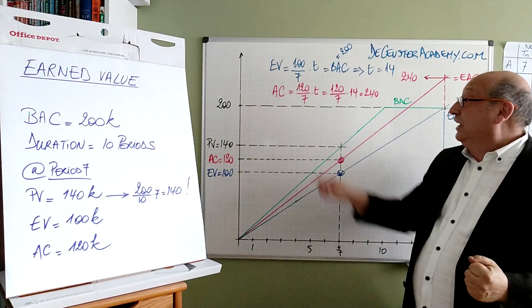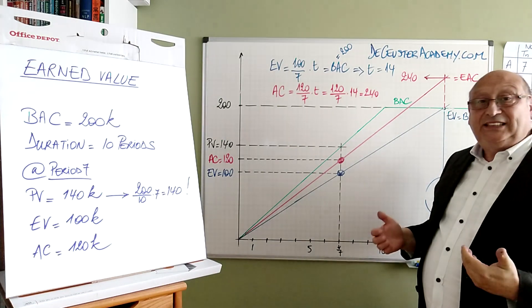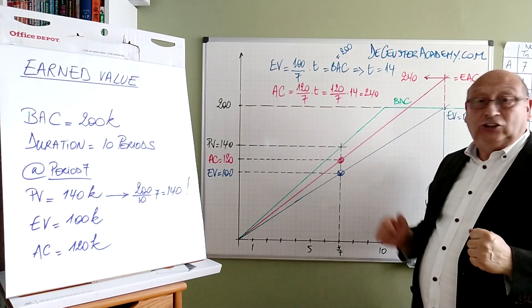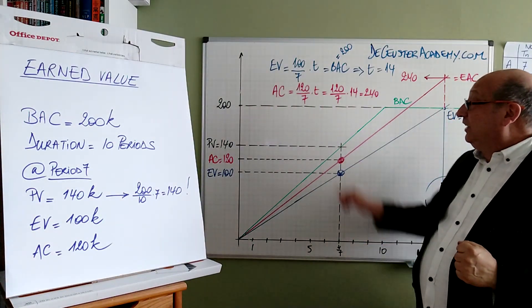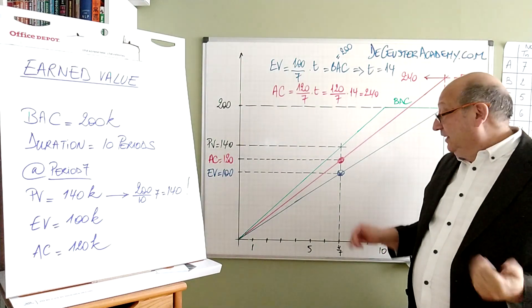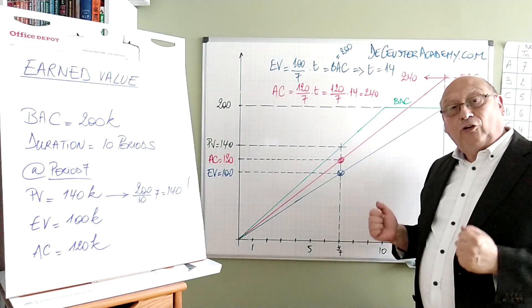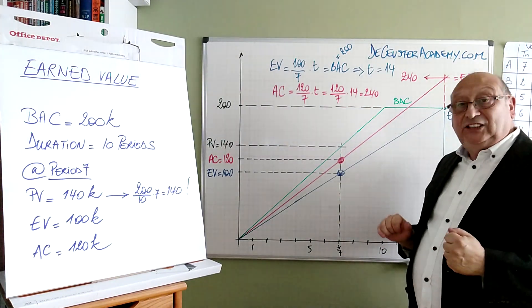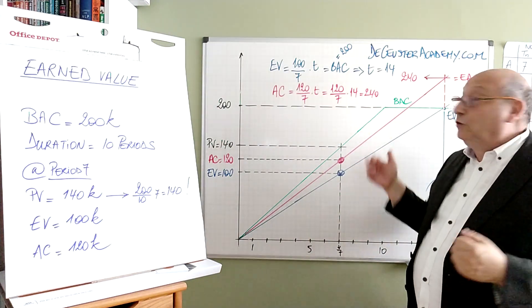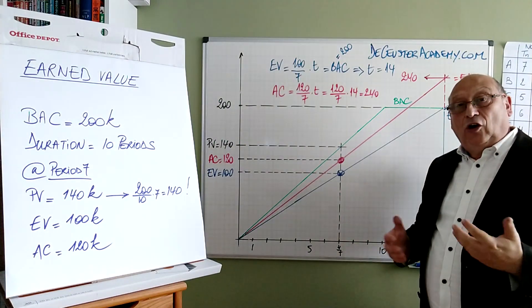We can say that the actual cost is 120 divided by 7 times T. 120 divided by 7 is the slope of this red line. T is the period when we apply it. When we say we continue till period 14, we replace T by 14 and we see it's times 2, so it's 240. So the estimate at completion using the earned value method will be in this case 240k.